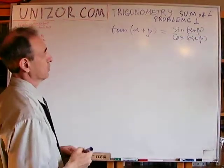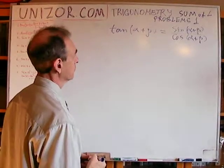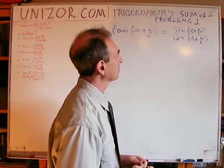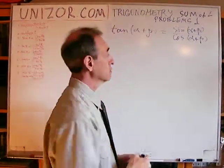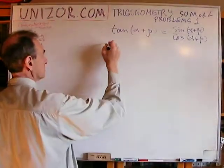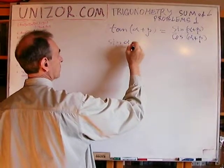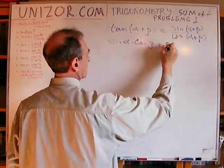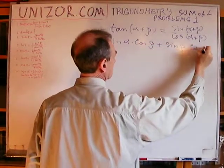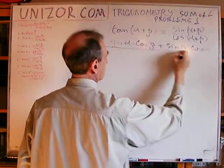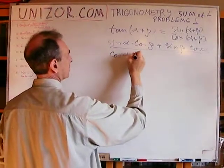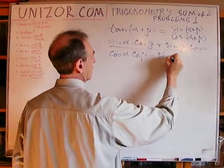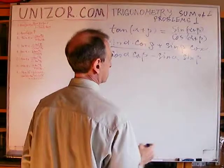That's one thing we obviously have to use. I know the formula for the sum of two angles for sine and cosine, so let's use it. Sine alpha cosine beta plus sine beta cosine alpha, divided by cosine alpha cosine beta minus sine alpha sine beta.